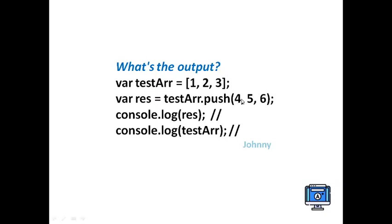Here it will add the values 4, 5, and 6 at the last index. Push inserts the elements at the end of an array. The array becomes 1, 2, 3, 4, 5, and 6, whereas console.log of result will return the length of the array.